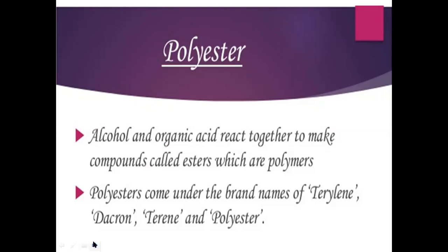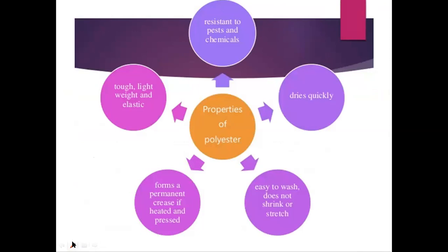Properties of polyester: it is resistant to pests and chemical spills — chemicals and pests cannot easily affect it. It dries quickly and is easy to wash. It does not shrink or stretch. It forms a permanent crease if heated and pressed, meaning the fold or lining becomes permanent. It is tough, lightweight, and elastic in nature.